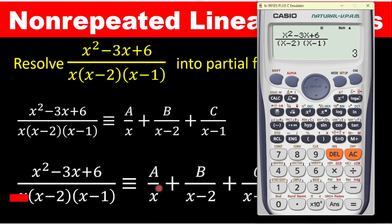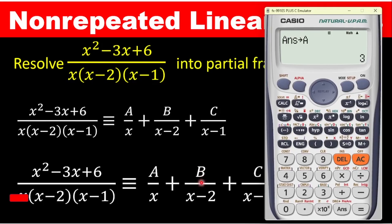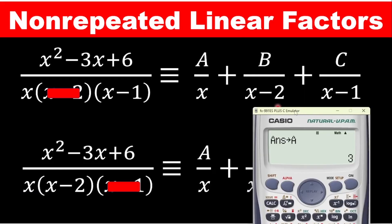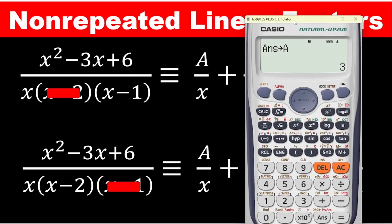To save A on the calculator, press shift, press store, and assign it to A. Now we move on to find B. To do that, you uncover A's denominator and cover the denominator of B on the left hand side. After covering it, enter the remaining expression on the calculator. Thankfully, you can edit the existing expression — the top one, x squared minus 3x plus 6, is already there.